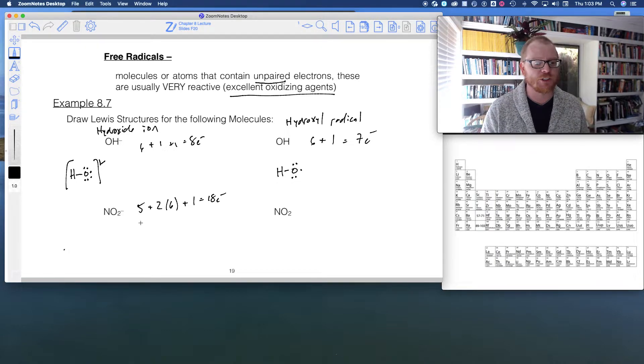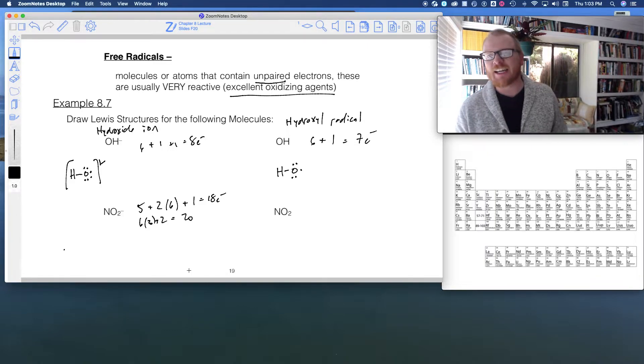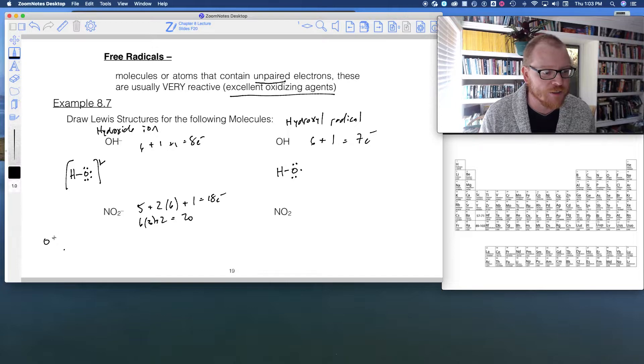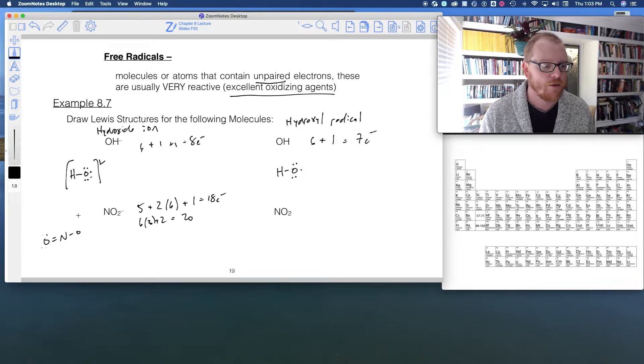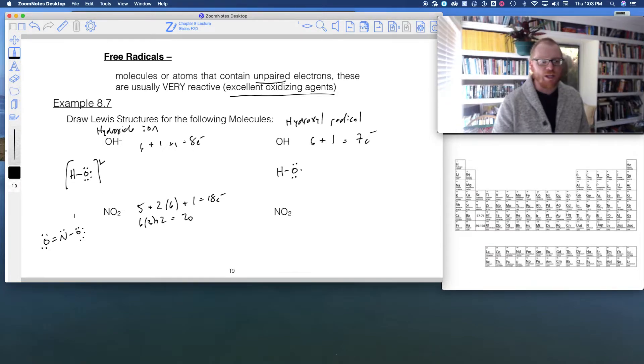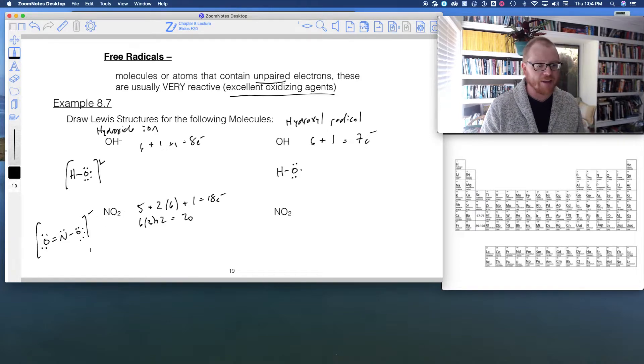And if we were to do the Lewis structure, let's actually do Clark's rule first. Six times three plus two gives me 20. So this has a double bond. Additionally, it has a resonance structure. So it's going to look like this. Oxygen, double bond, nitrogen, single bond, because difference of two tells me one double bond. And then we should note that it's got a negative charge. And additionally, there's a resonance structure. So the double bond can switch sides.